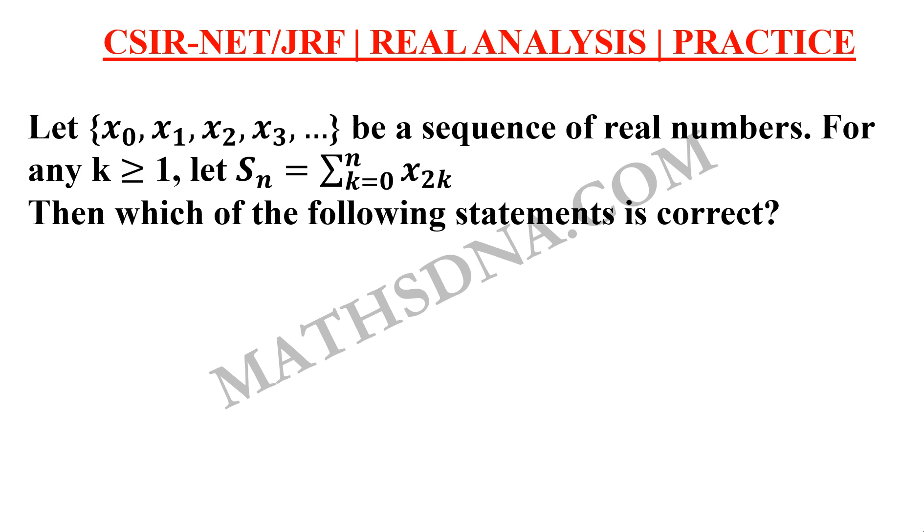Let x0, x1, x2 and so on be a sequence of real numbers. For k is greater than equals to 1, let Sn equals to summation k running from 0 to n x to k that is the even number of terms. Then which of the following statements is correct?